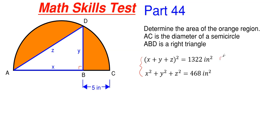I'm going to call this the first equation equation one, the second equation equation two, and since this is a right triangle I can also relate X, Y, and Z. So X squared plus Y squared is equal to Z squared using the Pythagorean theorem.